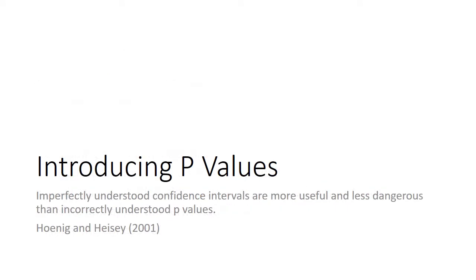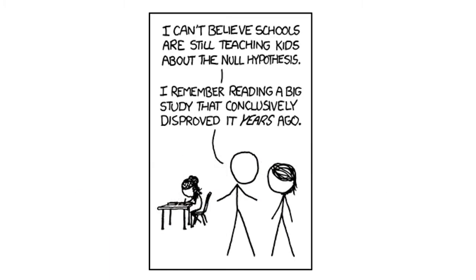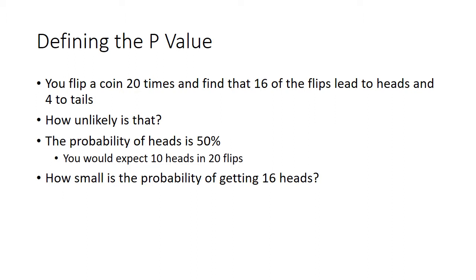So first off, we're going to talk about what a p-value actually is. Basically if we were to flip a coin 20 times and find that 16 of the flips led to heads and four to tails, how unlikely is that to have occurred? We assume that with an unbiased coin flipped 20 times, you would expect to see 10 heads. If you were to repeat that experiment many times over, just kept flipping it 20 times and recording those results, you would eventually find due to regression to the mean that on average you would get close to 50%.